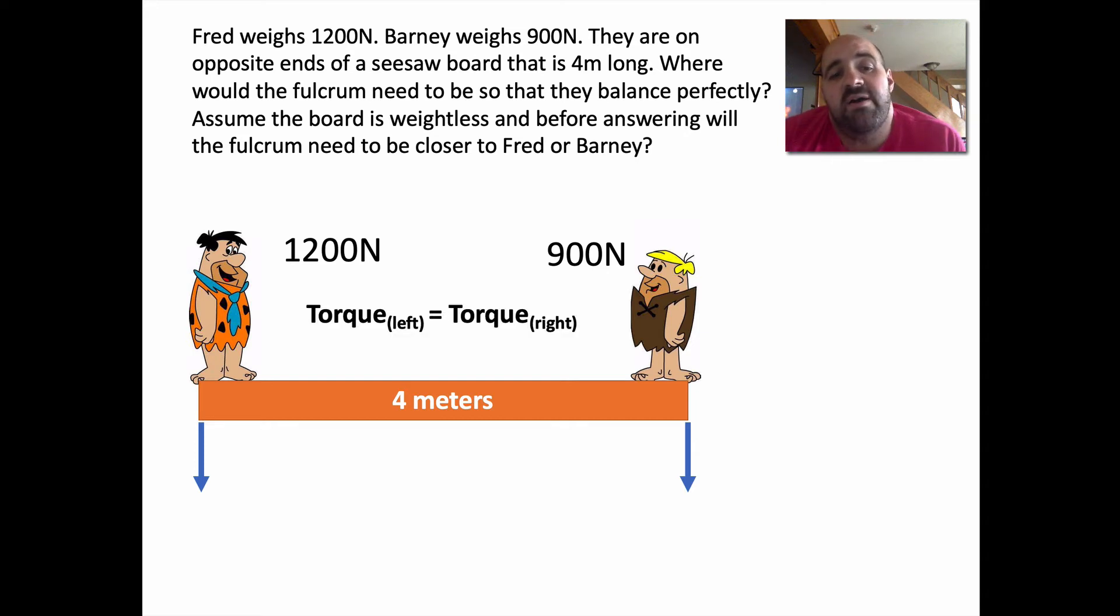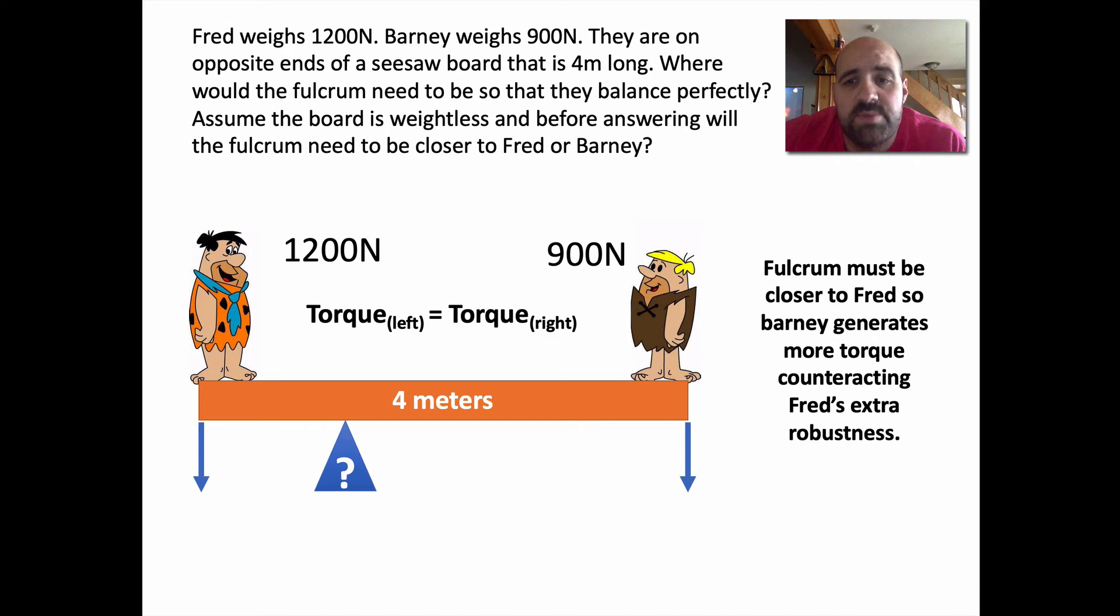And we are going to use this formula of torque on the left equaling torque on the right. And that is the main equation we're working with right now. So the fulcrum must be closer to Fred. So Barney generates more torque counteracting Fred's extra robustness. Mr. Zappone is very robust too. So he's not making fun. We know that force times distance on the left equals force times distance on the right, radial distance.